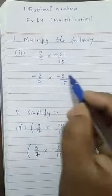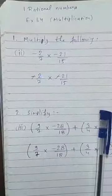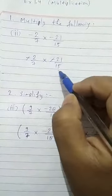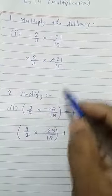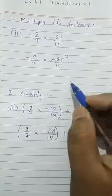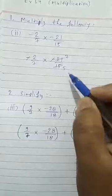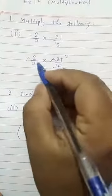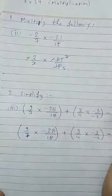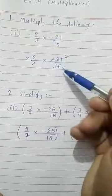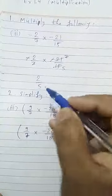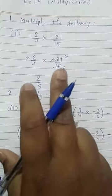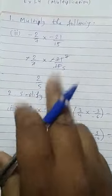Minus minus is cancelled. 21 and 15 come in the table of 3. 3, 7, 21. 3, 5, 15. 7, 7 are cancelled. So your answer is 2 upon 5. It was a simple case. And according to this solution, you will do the rest parts of question 1.